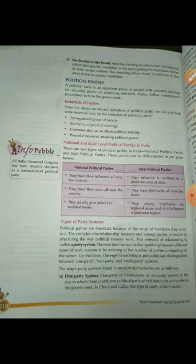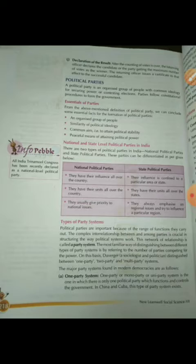The most familiar way of distinguishing between different types of party system: one party system is the one in which there is only one political party which functions and controls the government. It is a monopoly — the only political party functions and controls the government. Like in China and Cuba, this type of monopoly party system exists.